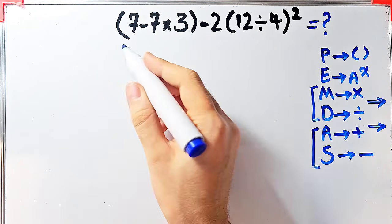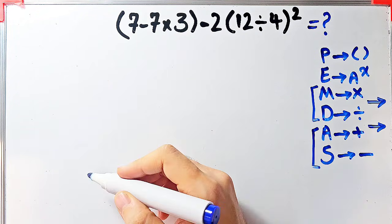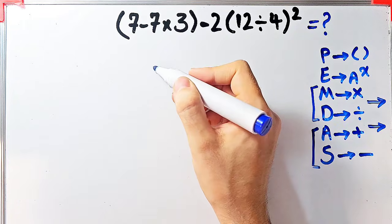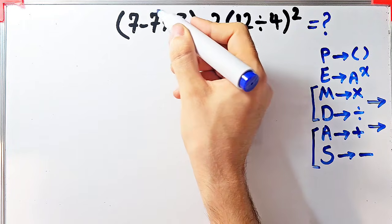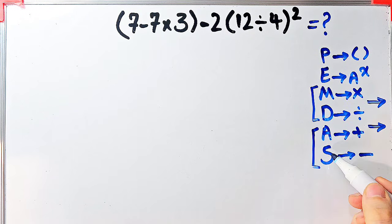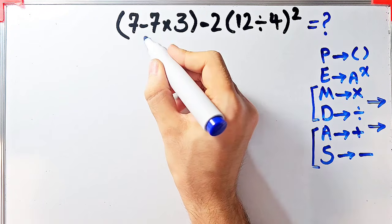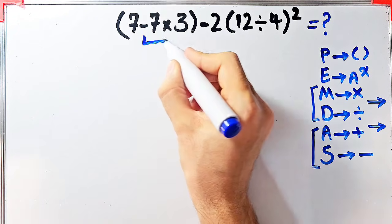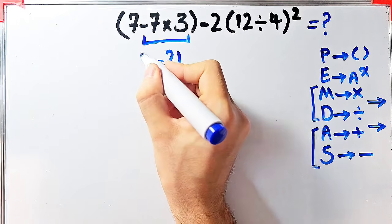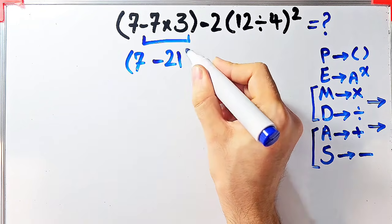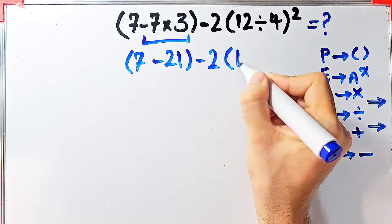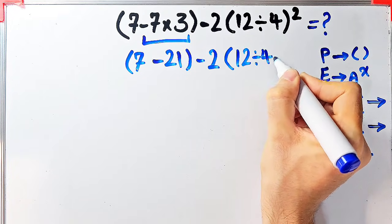According to the PEMDAS rule, first we simplify the parentheses. Inside the first parentheses we have subtraction and multiplication. First we do the multiplication because it has higher priority than subtraction. Negative seven times three equals negative twenty-one. Now the question becomes: seven minus twenty-one inside the parentheses, then minus two times twelve divided by four, then all of them to the power of two.